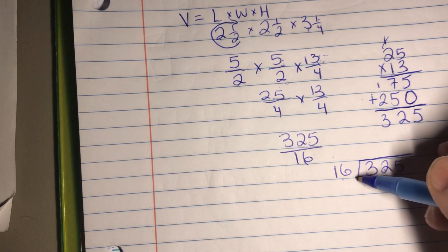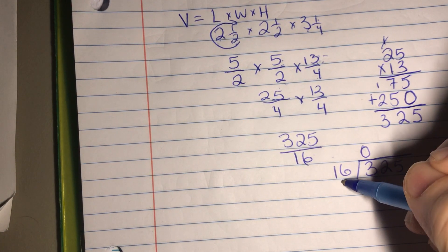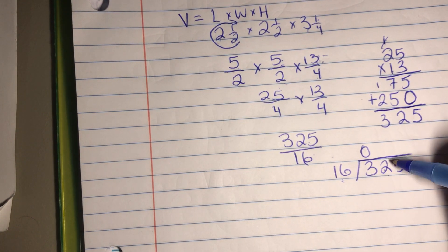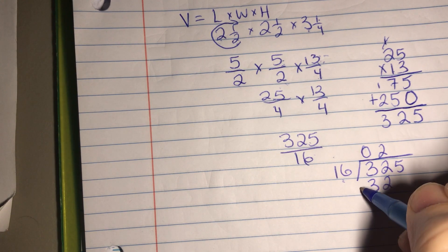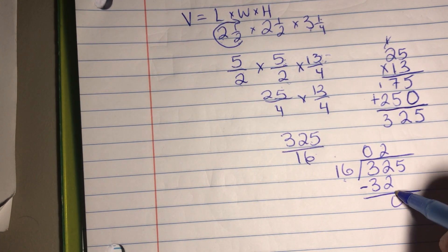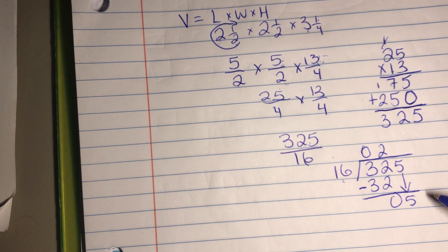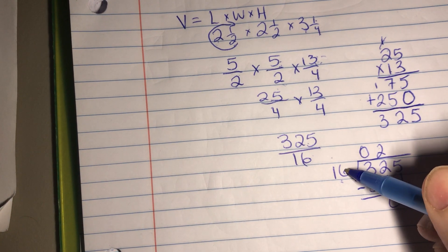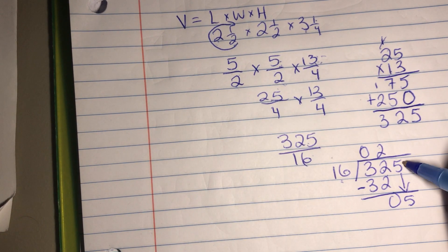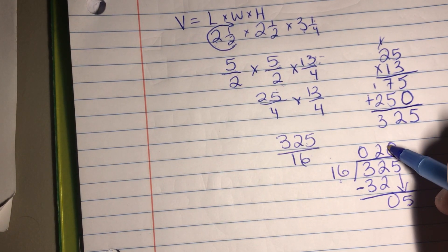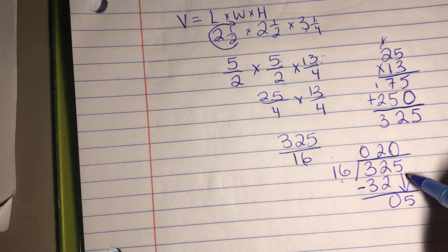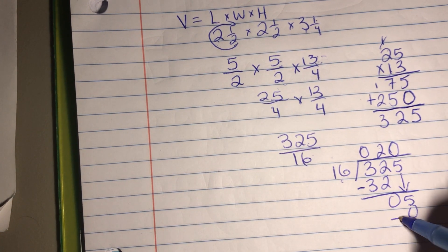Then we just do one number at a time. Sixteen will not go into three. Sixteen will go into thirty-two. Twice. Two times sixteen is thirty-two. The difference is zero. We're going to carry down the five. Now, we can't just say sixteen doesn't go into five, so we just won't do anything. We need to have a digit above the five. Sixteen will not go into five, so we have zero. Of course, that means that zero times sixteen is zero if you really need to write this step out.